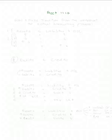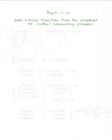Hi-de-ho, and we're back and ready to go. Let's have a discussion on Chapter 2. First of all, what's our goal? Our goal with this pencast is to make the transition from using the worksheet that we learned in Chapter 1 to the actual accounting process using real accounting journals and ledgers. The worksheet that we learned in Chapter 1 had some important concepts that we bring forward into Chapter 2.